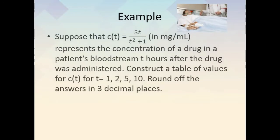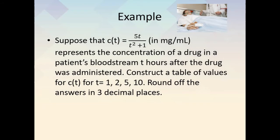Example: Suppose that c of t is equal to 5t over t squared plus 1, in milligrams per milliliter, represents the concentration of a drug in a patient's bloodstream t hours after the drug was administered. Construct a table of values for c of t for t equal to 1, 2, 5, and 10, rounding off to 3 decimal places.